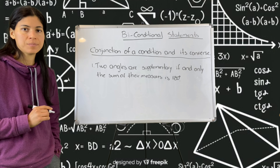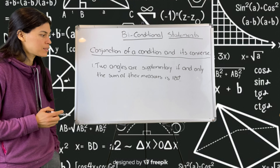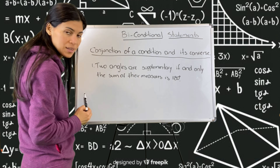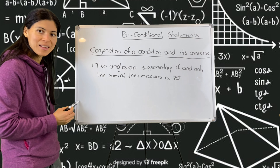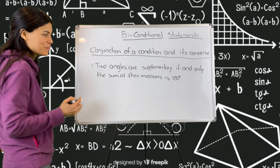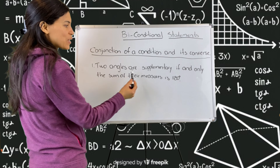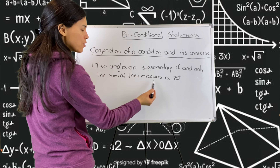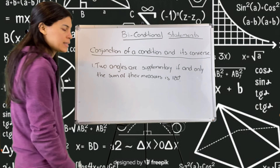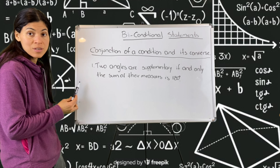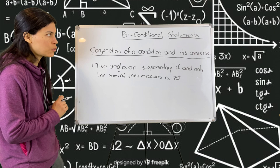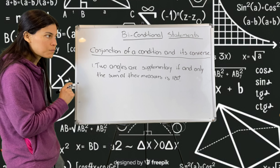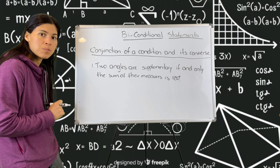So those are your words to fill in: a biconditional statement is true when both the conditional and the converse are true. If you need time, you can pause the video at any moment and then fill in. The first example: two angles are supplementary. Supplementary means that they add to 180 degrees.